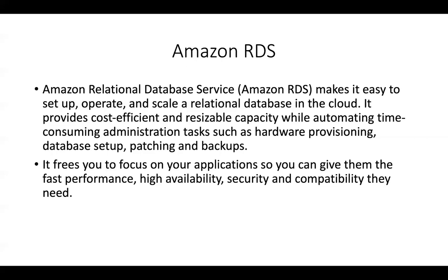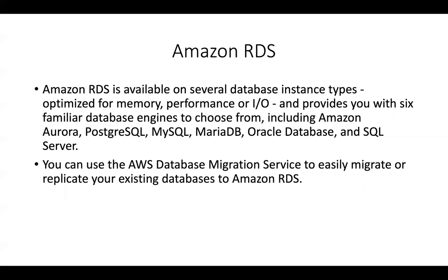RDS is available for several database instance types optimized for memory, compute, performance, and I/O. It provides six database engines: on the proprietary side — Oracle and SQL Server; on the open-source side — MariaDB, MySQL, and PostgreSQL; and Amazon's own database, Amazon Aurora, which includes storage auto-scaling, global database, multi-writer capability, multi-master support, and up to 64 TB of storage.